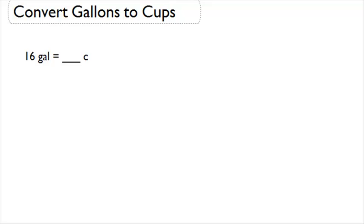Now let's talk about how to convert gallons to cups. In order to convert any two units we need to know the formula that relates those two units. In this case our formula is that one gallon is equal to 16 cups.